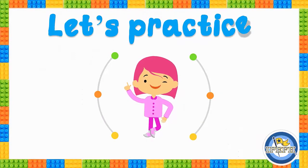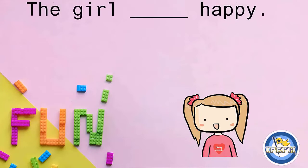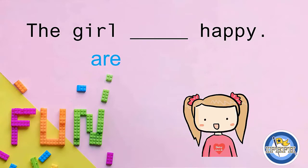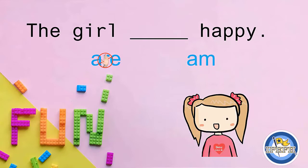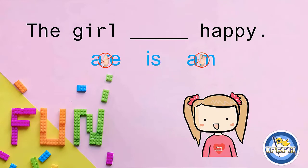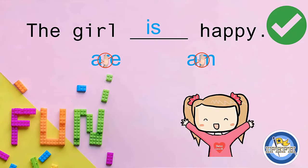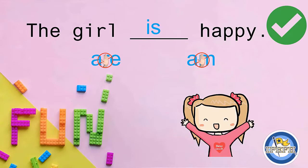Now let's practice. We have a picture of a girl, and the sentence says 'the girl happy.' Is it going to be with 'are'? No, incorrect. Is it going to be with 'am'? No, incorrect. It is going to be with 'is.' The correct answer is: the girl is happy. Why? Because she is a girl, so it is in the bubble for 'is.' The girl is happy.